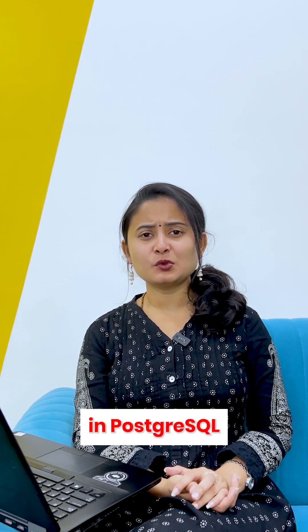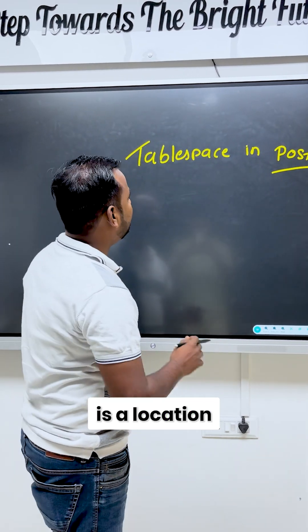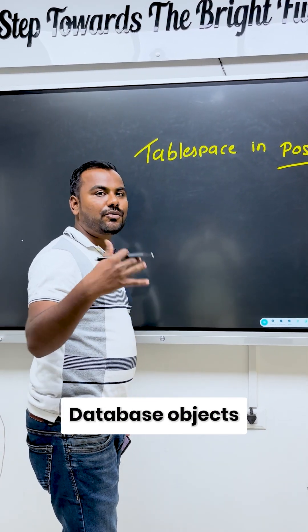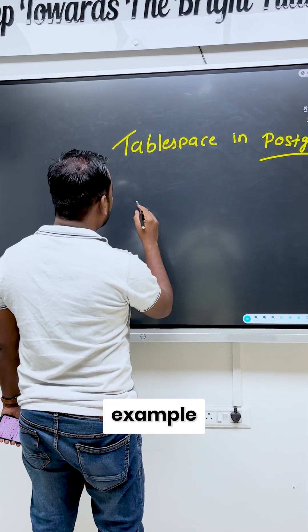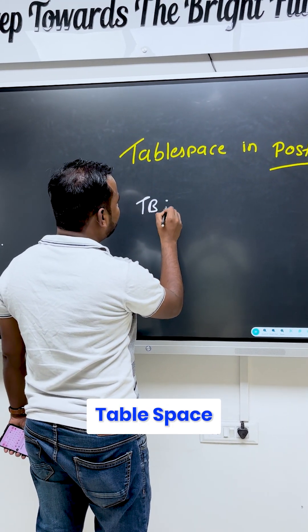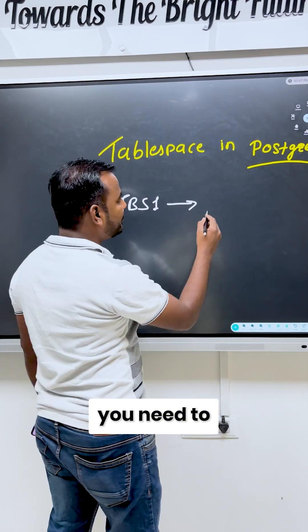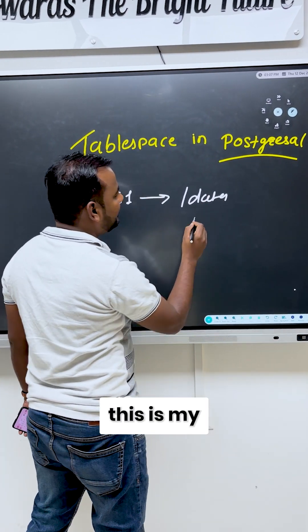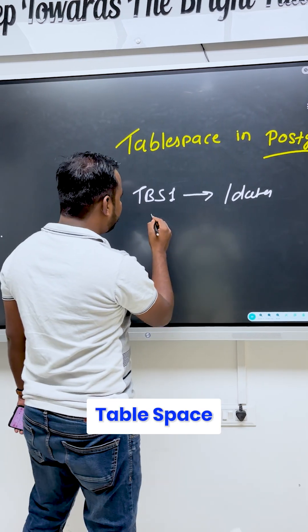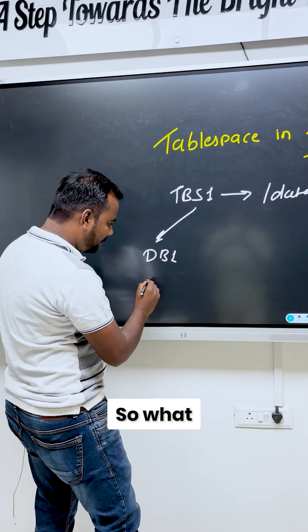Can you please explain what is tablespace in PostgreSQL and what is its importance? A tablespace is a location where your database objects are going to be stored. For example, I created one tablespace with the name tbs1, and when you create a tablespace you need to specify a physical location.